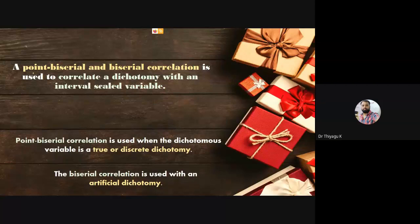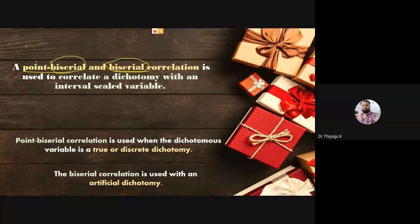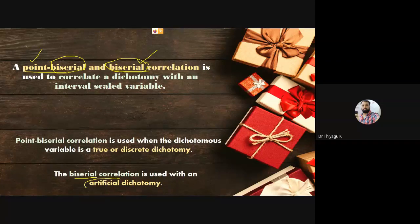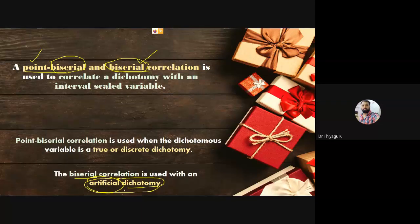Now, when can we use point biserial versus biserial correlation? For biserial correlation, one variable should be dichotomous and the other continuous — and the dichotomous variable should be artificial. So if you have male and female, you should not use biserial. The condition for biserial is that the dichotomous variable must be artificial — like pass/fail or socially adjusted/not adjusted.